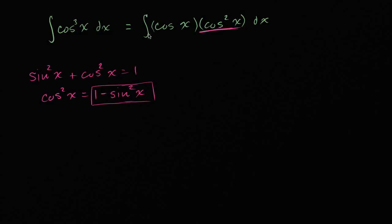So let's try it out. So if we do that, this is going to be equal to the integral, the indefinite integral, cosine of x times one minus sine squared x dx.